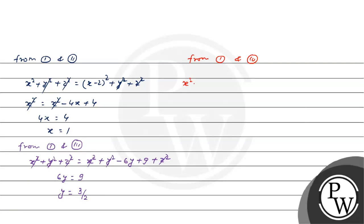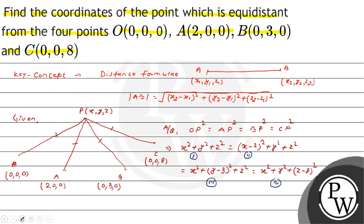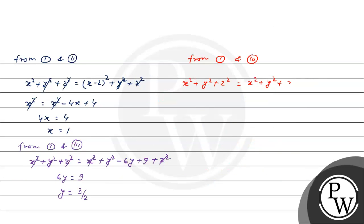From equations 1 and 4: x²+y²+z² = x²+y²+(z−8)². The x² and y² cancel, giving z² = z²−16z+64, so 16z = 64, and the value of z is 4.